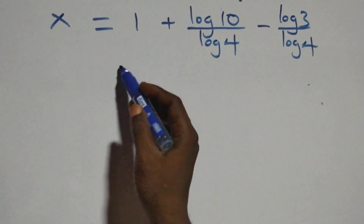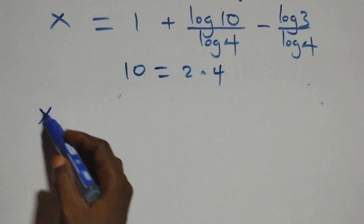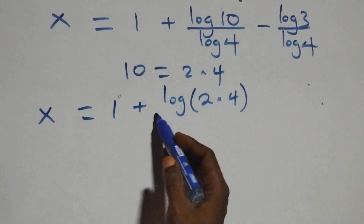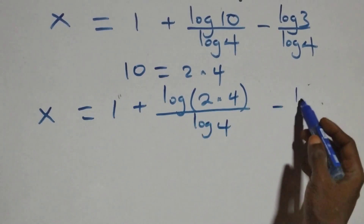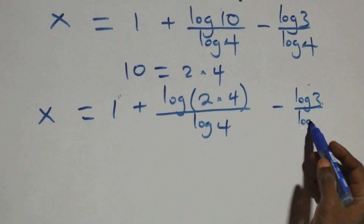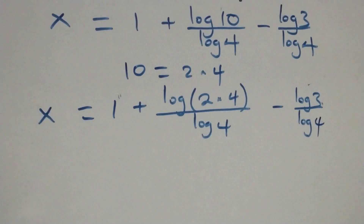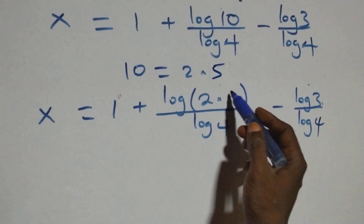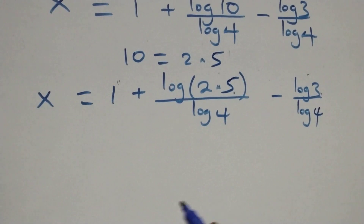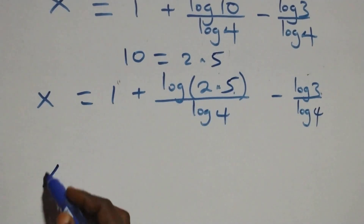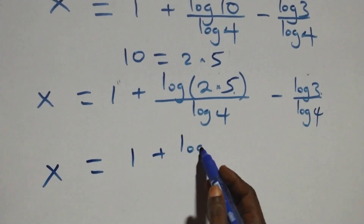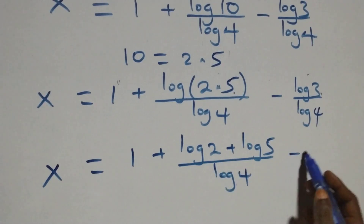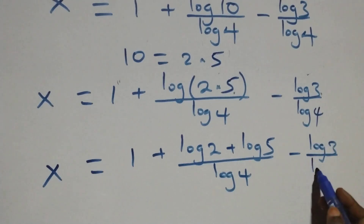Excuse me please — 10 should be 2 times 5, not 2 times 4. Now, applying the product rule of logarithms, this becomes x equals to 1 plus log 2 plus log 5, all over log 4, minus log 3 over log 4.